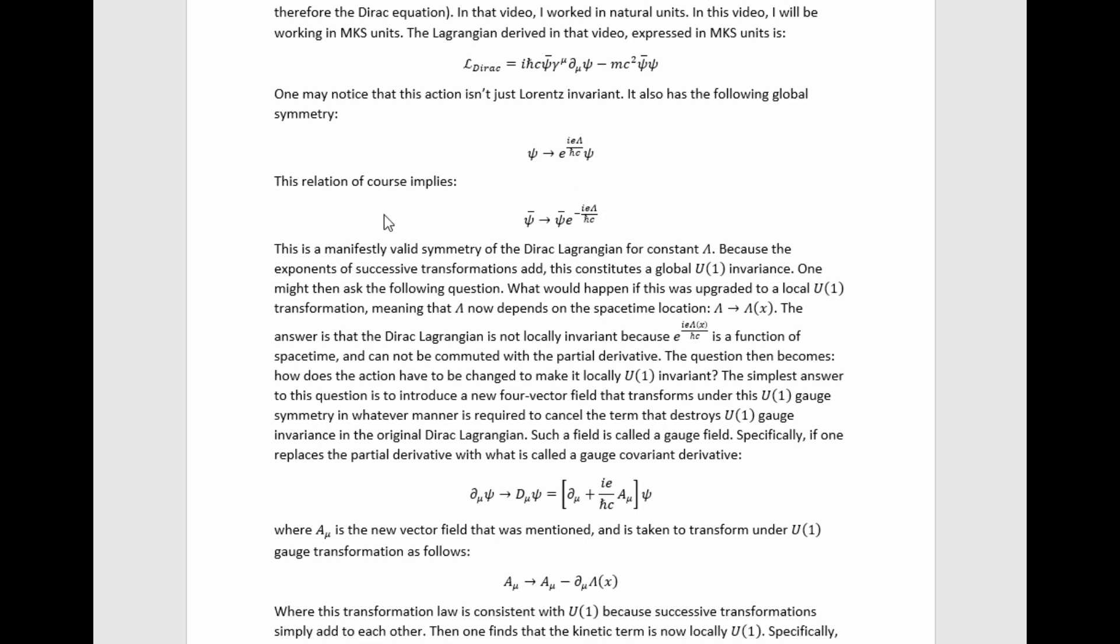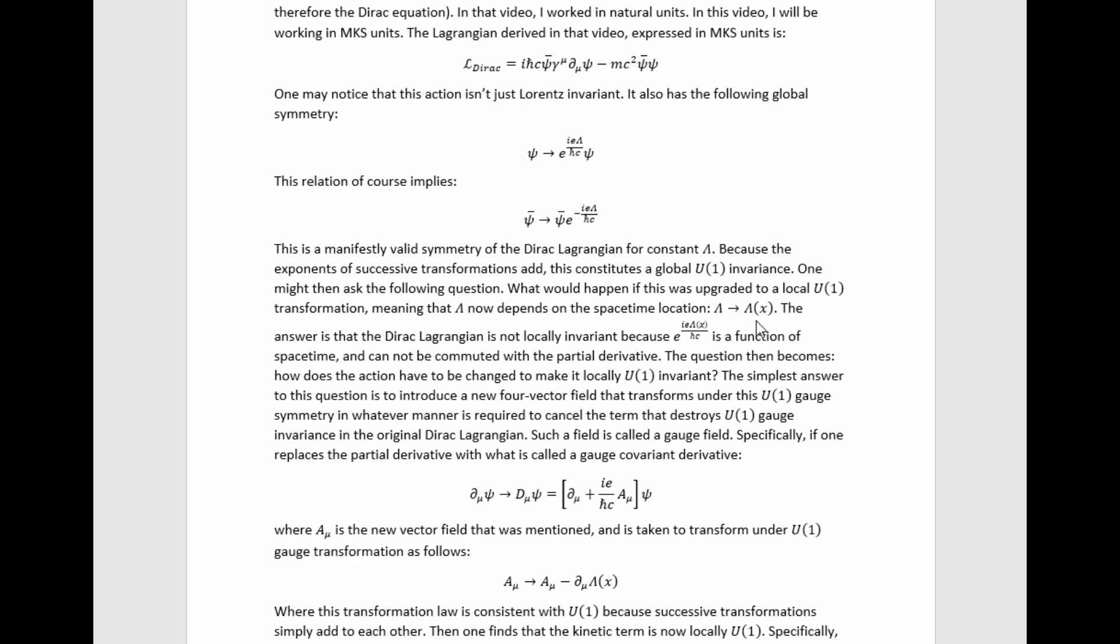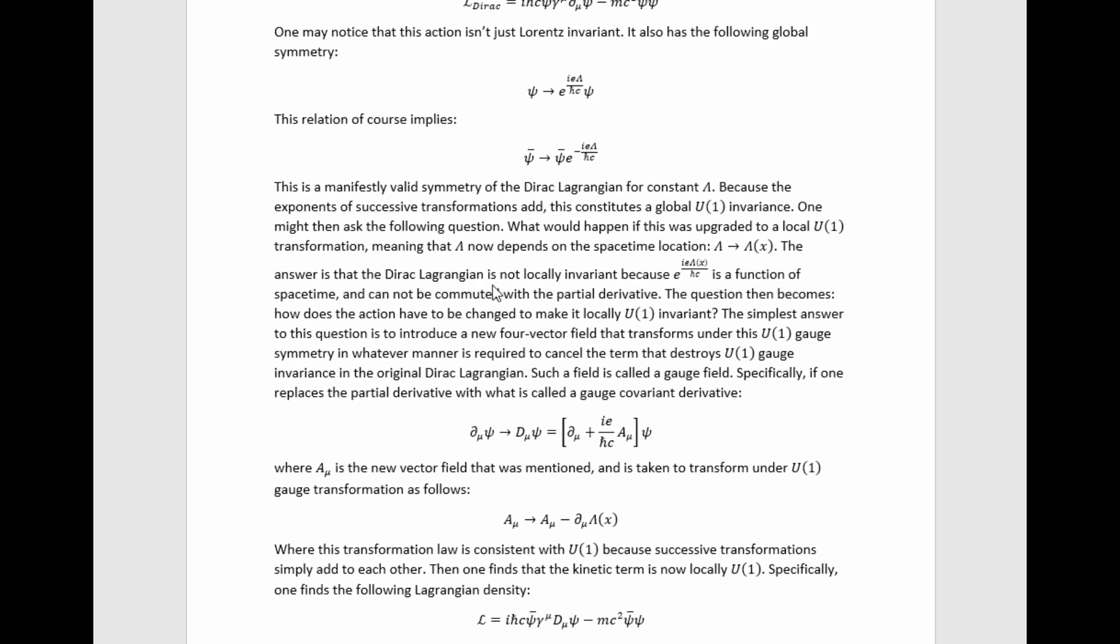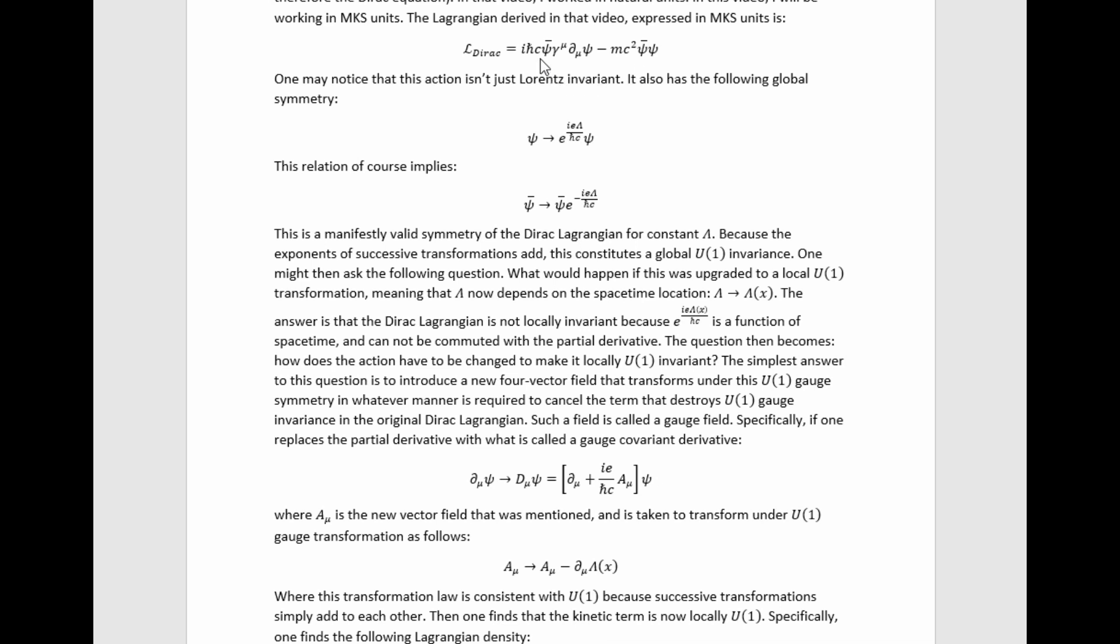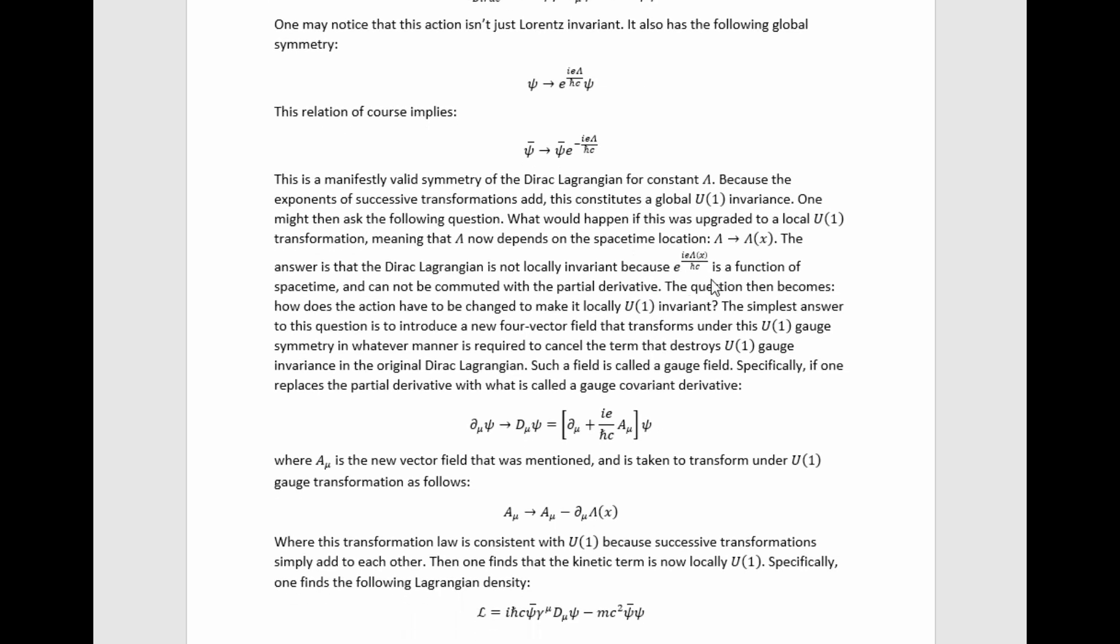Because the exponentials of successive transformations add, this constitutes a global U1 invariance. One might then ask the following question, what would happen if this was upgraded to a local U1 transformation? Meaning lambda now depends on space-time. So lambda goes to lambda of x, where x just represents dependence on all the coordinates of space-time. The answer is that the Dirac Lagrangian isn't invariant under this more general transformation, this local version of the one it is invariant under, because this factor is a function of space-time and therefore cannot be commuted with the partial derivative. This term is still invariant, but this one isn't because of that partial derivative, and this factor's dependence on space-time.